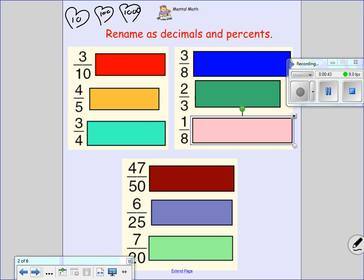So the first one, we have 3 tenths. That's easy, 0.3. If I'm putting something into a percent, I have to have two digits after the decimal. This is 30 percent.